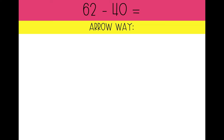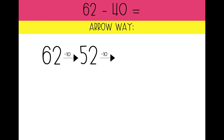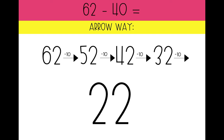Let's try 62 minus 40 using our arrow way. What number do we need to write down first? 62. And how many tens are we going to take away? We're going to take away four tens because 40 is four tens. 62 minus 10 is 52. 52 minus 10 is 42. 42 minus 10 equals 32. And 32 minus 10 is 22. So 62 minus 40 equals 22. We started with 62 and took away one, two, three, four tens, and that left us with 22.